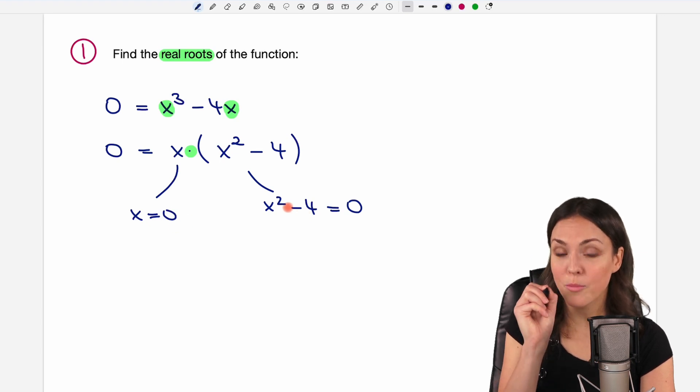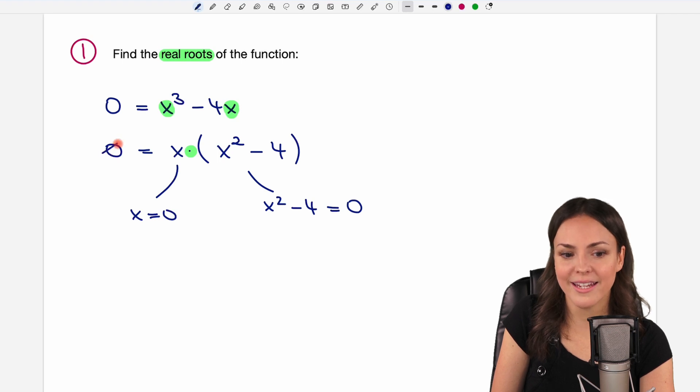But the important part of this is that a zero is on the other side. If here is a seven or any other number, then it doesn't work. So be careful. Only use it if you have something equals zero.